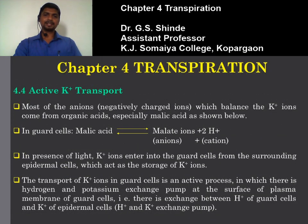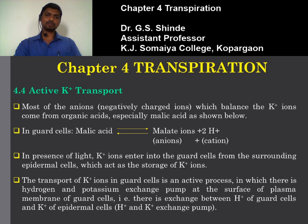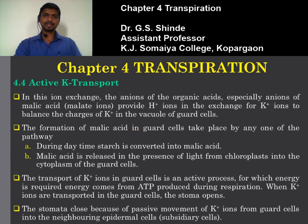The transport of K+ ions in the guard cell is an active process. There is a hydrogen and potassium exchange pump at the surface of the plasma membrane of the guard cell — an exchange between H+ ions of the guard cells and K+ ions of the epidermal cell. The anions of organic acids, especially malate ions from malic acid, provide H+ ions in exchange for K+ ions to balance the charges of K+ ions in the vacuole of the guard cell.